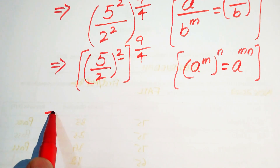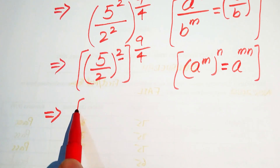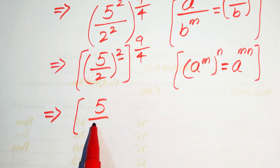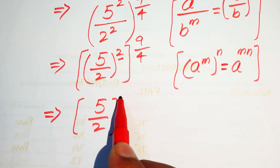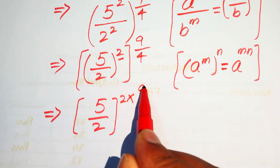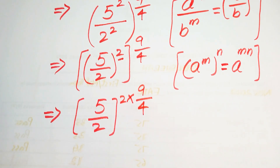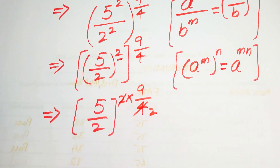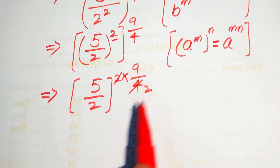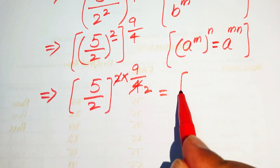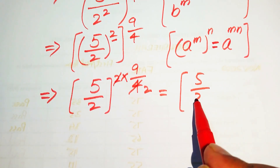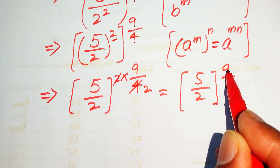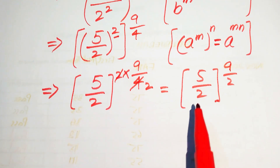Here we have exponent 2 and exponent 9 over 4, so these two are multiplied. We obtain 5 over 2, and its exponent is 2 multiplied by 9 over 4. The 2 cancels with the 4, giving us 5 over 2 with exponent 9 divided by 2.